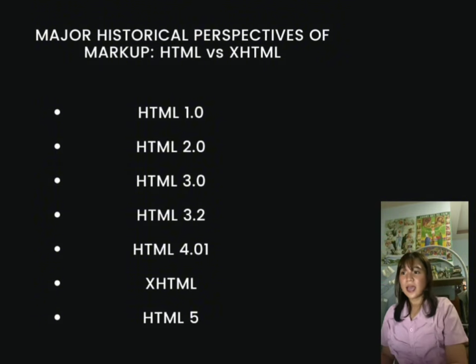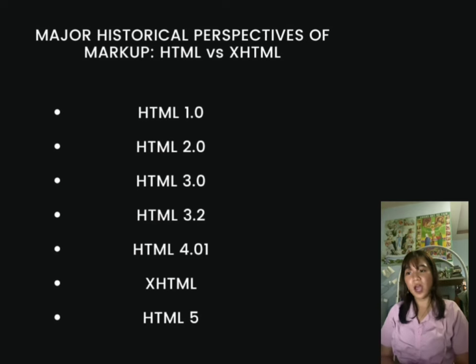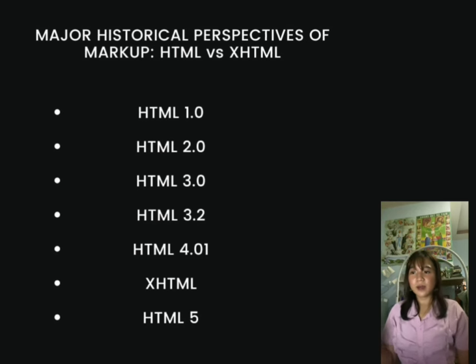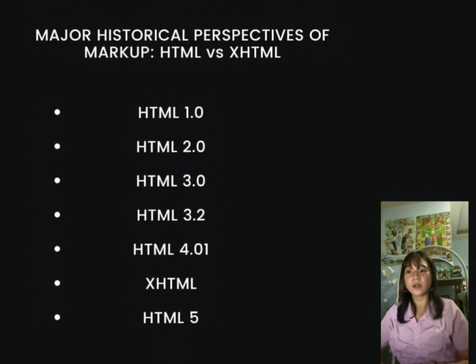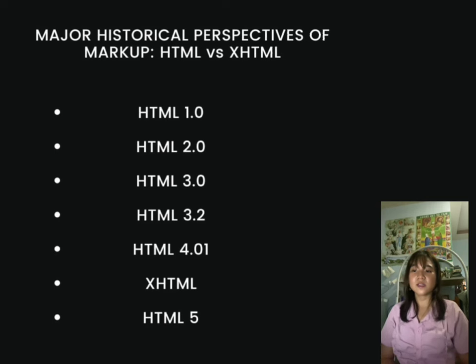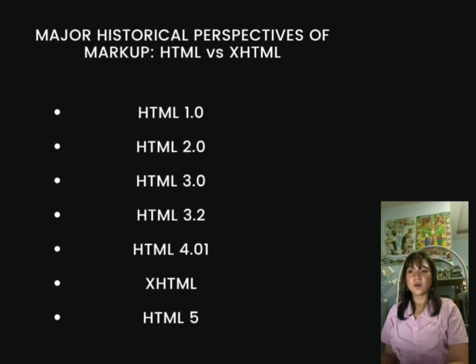HTML 4.01 provided better support so that developers could easily use Cascading Style Sheets. Then came XHTML — Extensible Hypertext Markup Language — which gave HTML the XML structure of well-formed documents and stricter syntax guidelines. The main versions of XHTML were 1.0 and 1.1. HTML5 marked a significant turning point in HTML development, making it simpler to develop rich web applications by introducing a wide range of new elements and APIs.